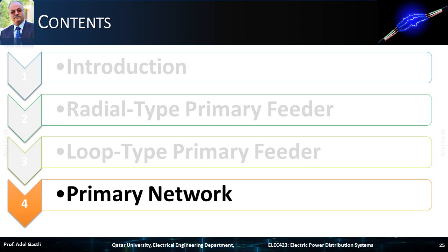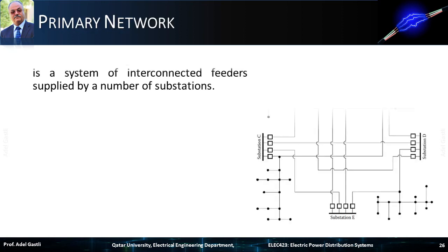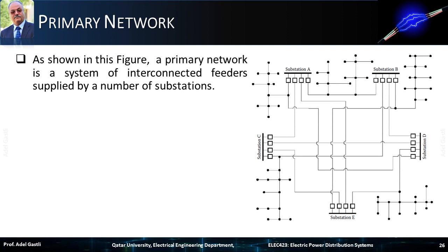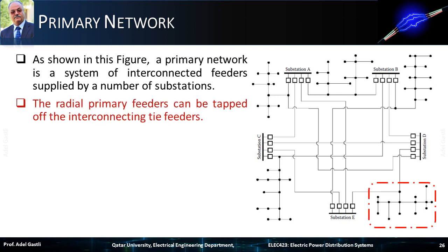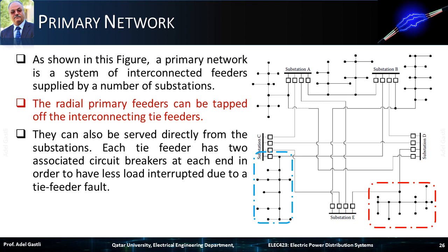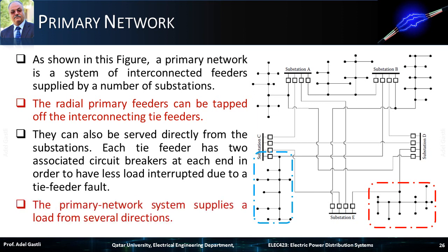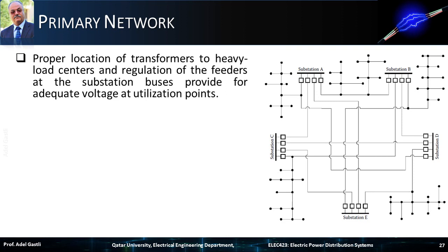Finally, let's consider the case of a primary network. As shown in this figure, a primary network is a system of interconnected feeders supplied by a number of substations. The radial primary feeders can be tapped off the interconnecting tie feeders, or they can also be served directly from the substations. Each tie feeder has two associated circuit breakers at each end in order to have less load interrupted due to a tie feeder fault. Therefore, the primary network system can supply a load from several directions. Proper location of transformers to heavy load centers and regulation of the feeders at the substation buses provide for adequate voltage at utilization points.